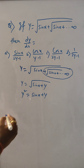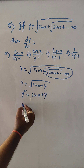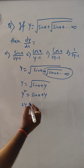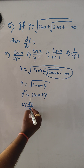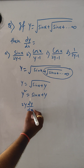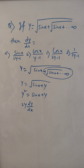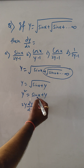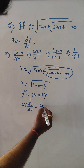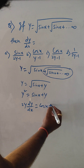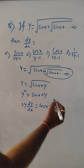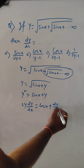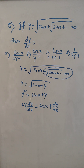Then we do differentiation. y squared differentiation gives 2y dy by dx. And here, sin x differentiates to cos x, and here this is y, so this is dy by dx.